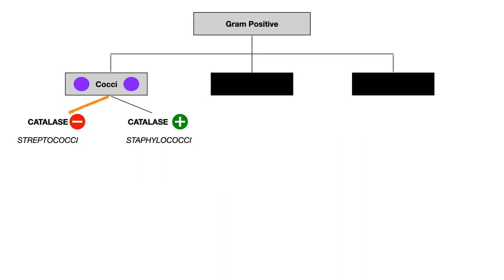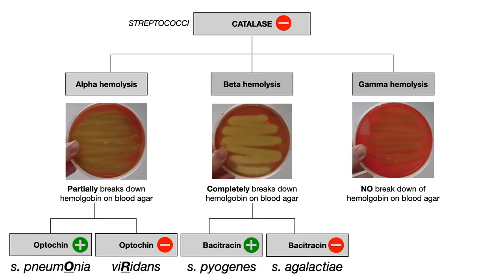Recall from our previous discussion, if you're going in order, that we've talked about gram positive cocci, and then we've split cocci into the catalase negative strep versus the catalase positive staph. The past few videos, we've been working through catalase negative strep. Within that strep category, if we zoom in on that branch shown here in the orange fuzzy line, we then further subdivide catalase negative strep depending on the pattern of hemolysis.